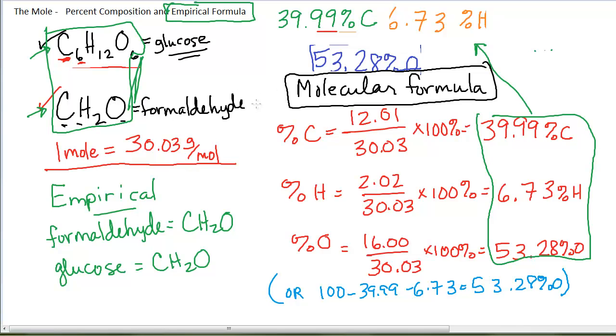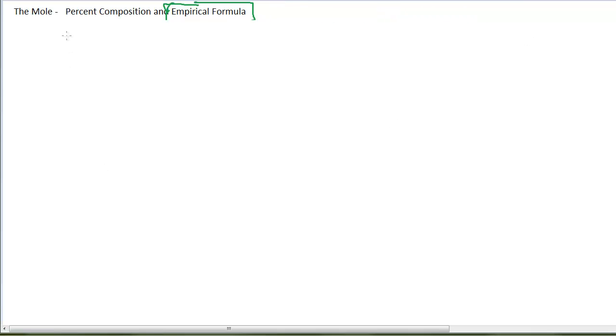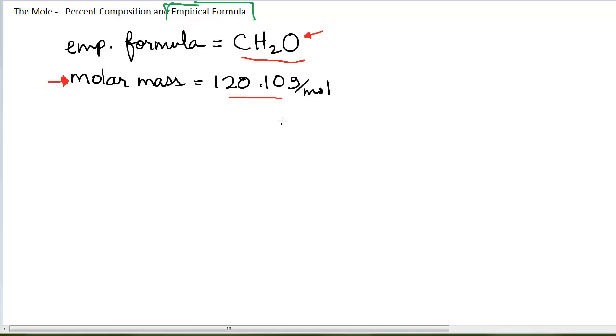If you know the empirical formula of a compound and its molecular mass, its molecular weight, what everybody added together is, then you can find the molecular formula. Let's do one of those quickly. Let's say that you know the empirical formula of a certain compound is CH2O. You also know that the molar mass of the compound is 120.10 grams per mole. We actually do have instrumentation in the laboratory that allows us to get molar masses of compounds. Experimental evidence would give us this value.